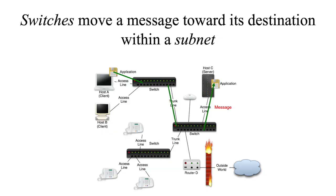How does that message get from the client to the server? Well, we can start with the switches. Switches move that message toward the destination within a subnet. The switch is the device that's moving the things, and a subnet is the collection or segment or sub-part of a network that is governed by those switches. Any part of a network that is connected with switches is considered a subnet. Switches move messages toward the destination within a subnet.